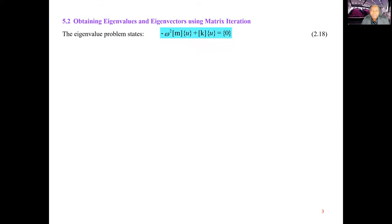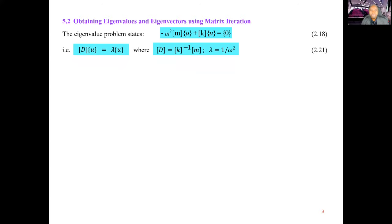The second method for obtaining eigenvalues and eigenvectors is the matrix iteration method. We start with the statement of the eigenvalue problem: minus omega-squared m u plus k u equals zero. If we pre-multiply this equation by k-inverse, it reduces to D u equals lambda u, where D — the dynamical matrix — equals k-inverse times m, and lambda equals 1 over omega-squared.